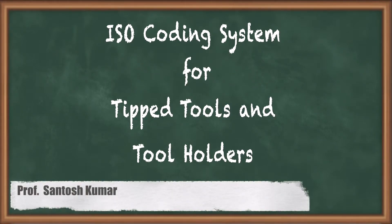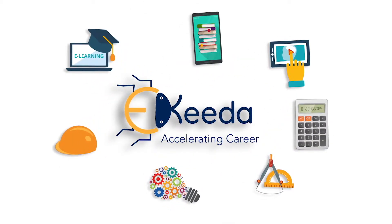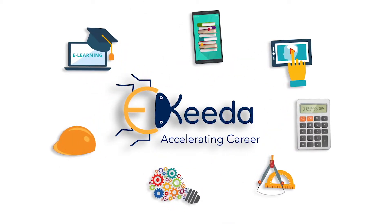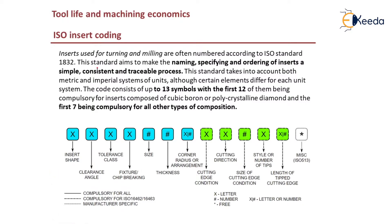Hello students, welcome back to Machining Sizes and Tool Design. In this video we'll be discussing the design of single point cutting tools, specifically the ISO coding systems for tip tools and holders. Inserts used for turning and milling are often numbered according to the ISO standard, ISO 1832. The standard aims at making naming, specifying, and ordering of inserts simple, consistent, and traceable.